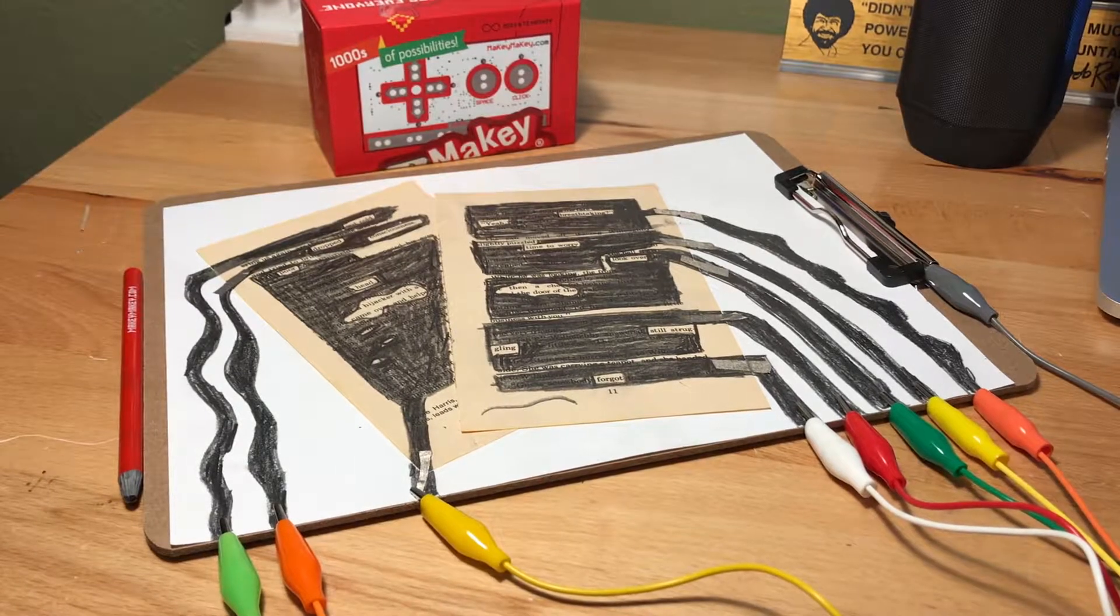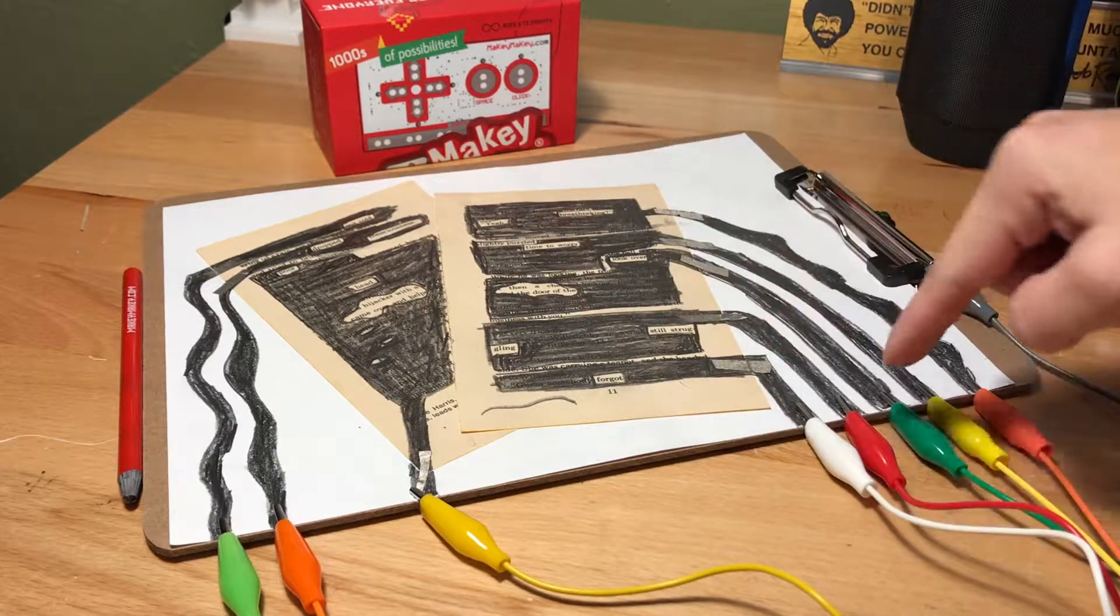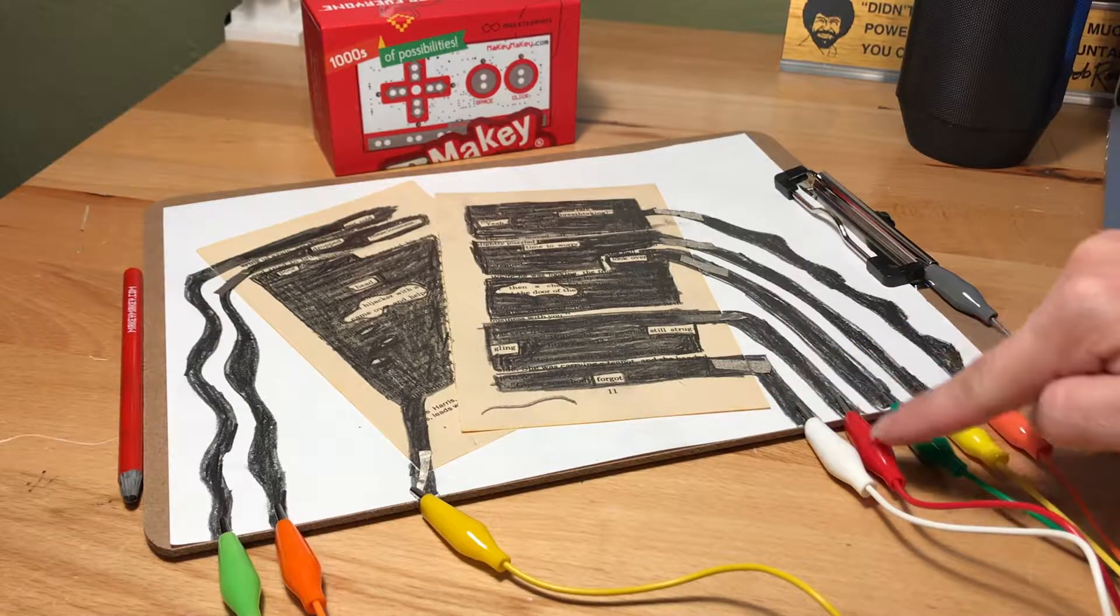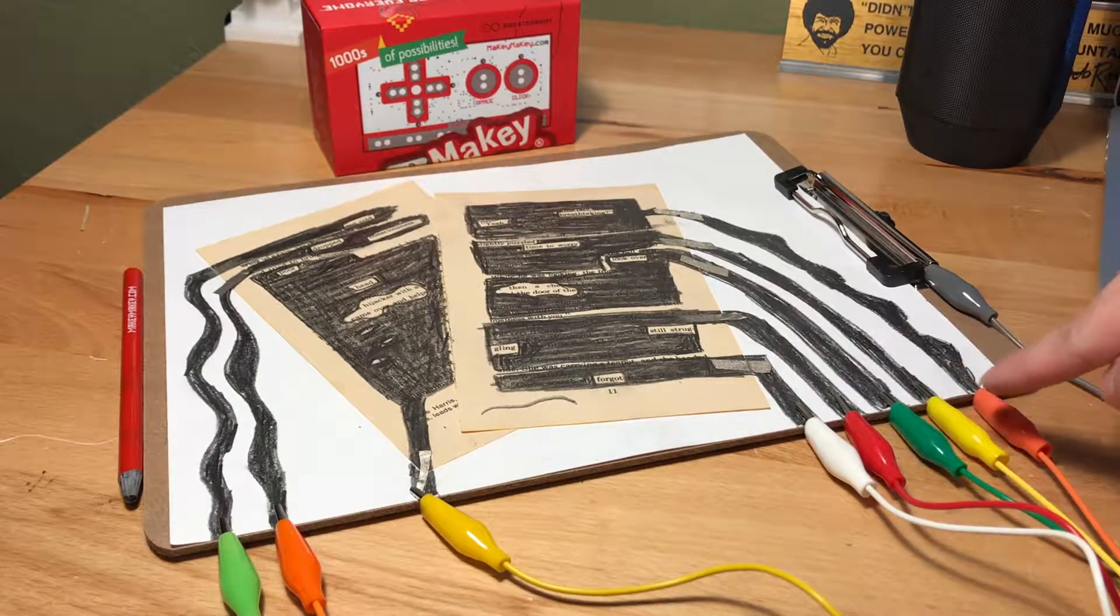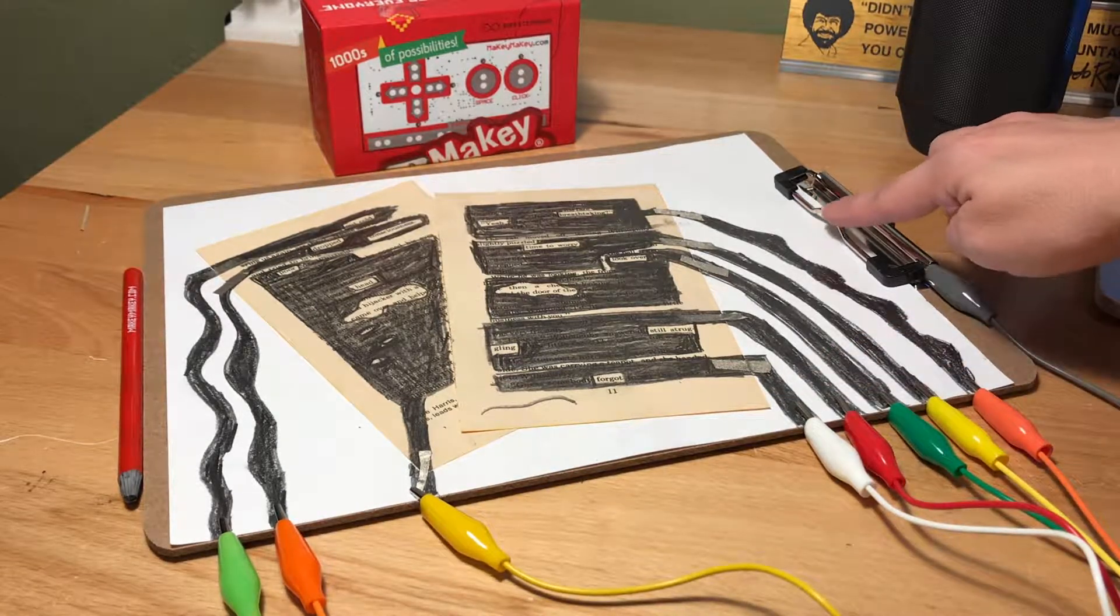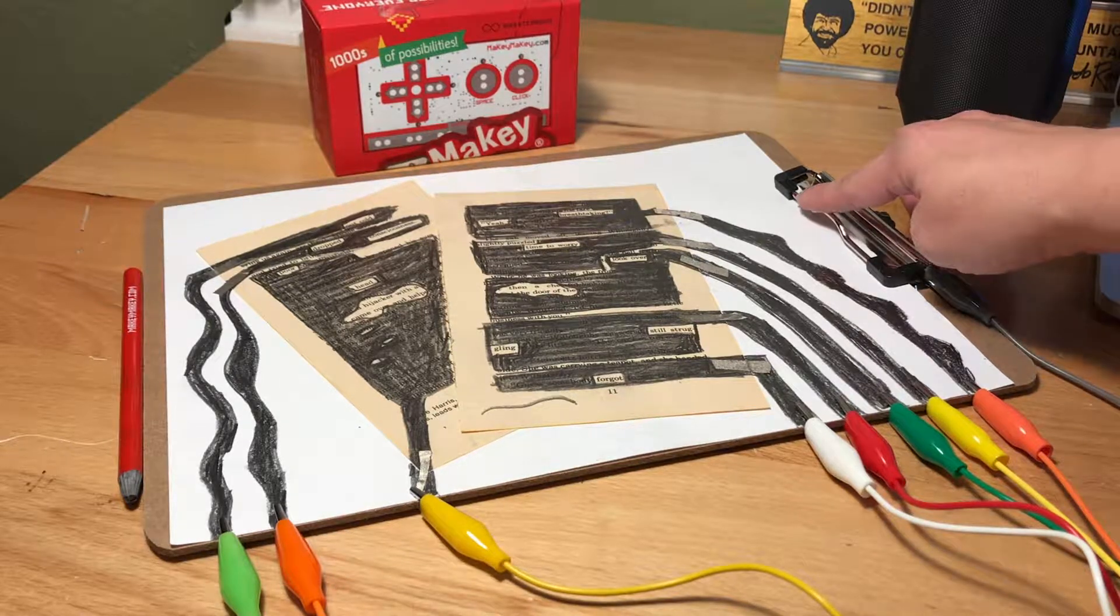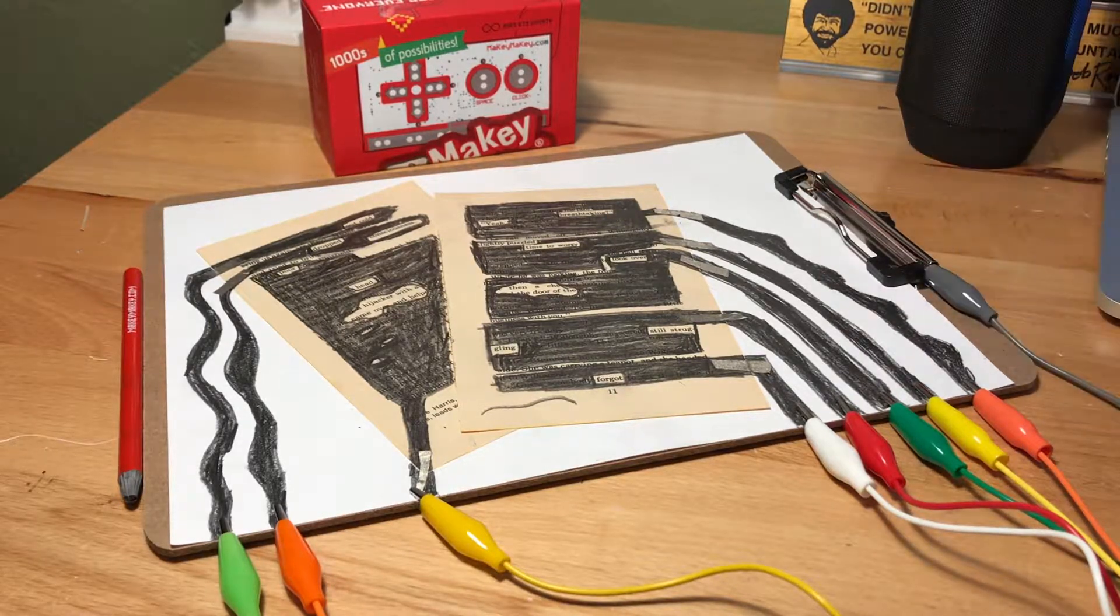Here's my more advanced blackout poetry example. I put it on a clipboard so I could attach my alligator clips to a nice steady surface. I'm actually using the metal on the clip as earth. I kind of got that idea from Chibitronics and our guide has that in it.